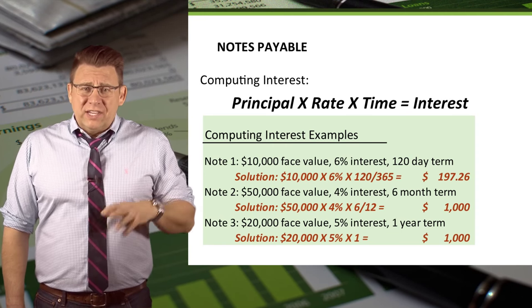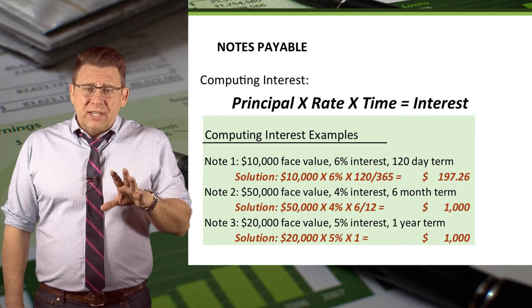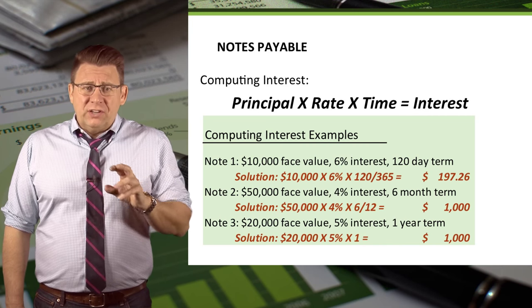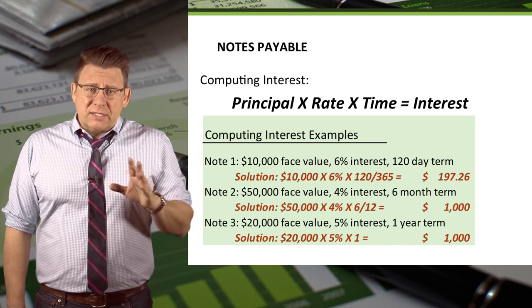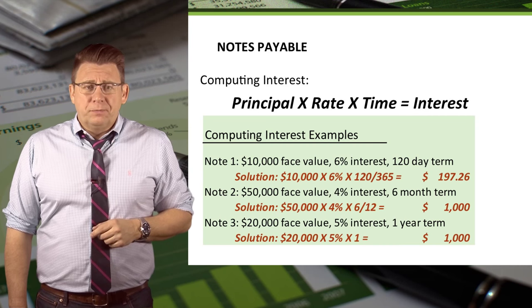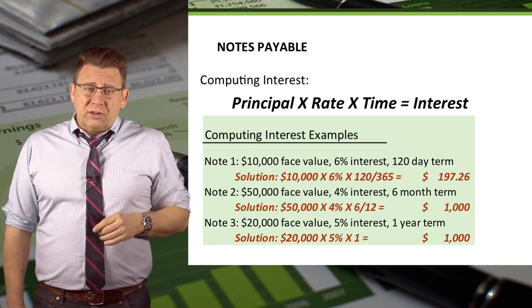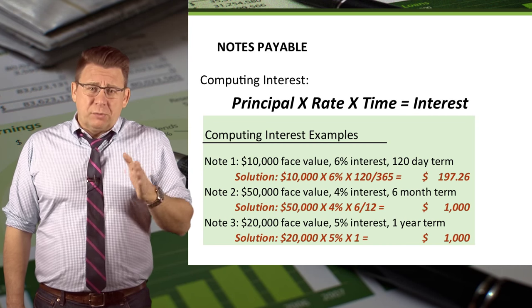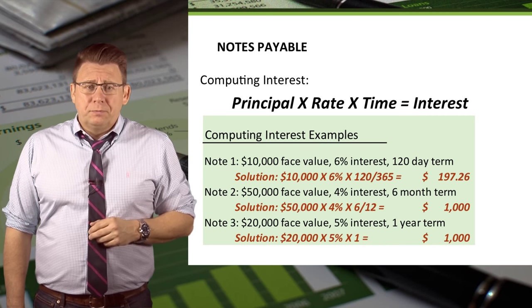You can see the term six months is converted into years by dividing 6 by 12. Finally, note three is for one year, so it's just the principal times the rate times one.